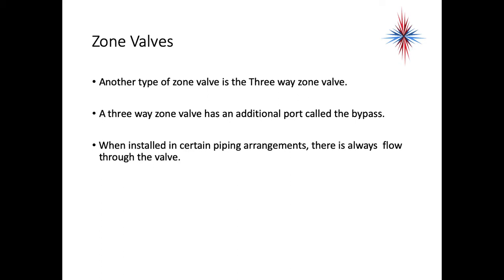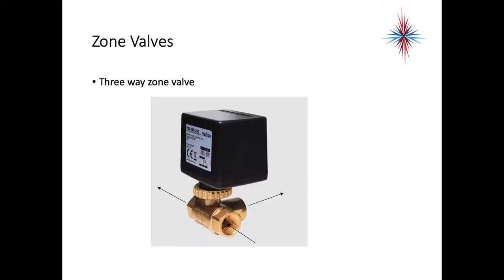Another type of zone valve is the three-way valve. A three-way zone valve has an additional port called the bypass. When installed in certain piping arrangements, there's always flow through the valve. This is the example of a three-way zone valve. It always allows water to continue to flow, and if the zone valve is open, it will send it to the device. If it's closed for the device, it still allows water to flow, thus maintaining circulation in a larger piping system.